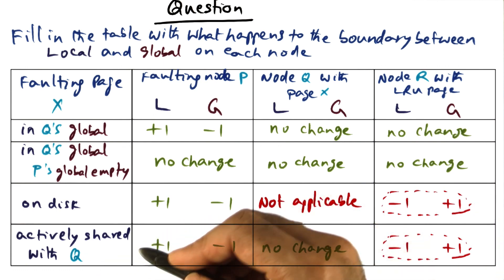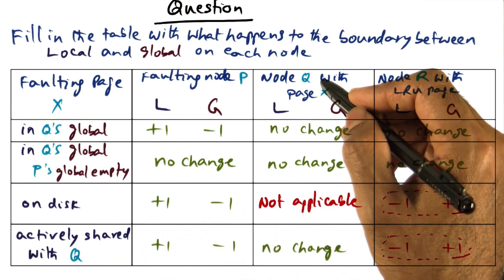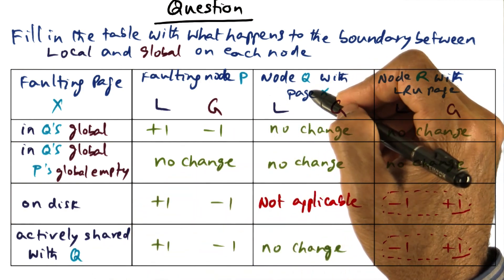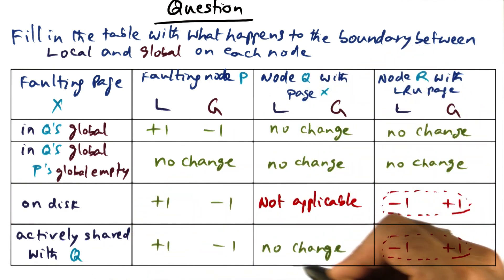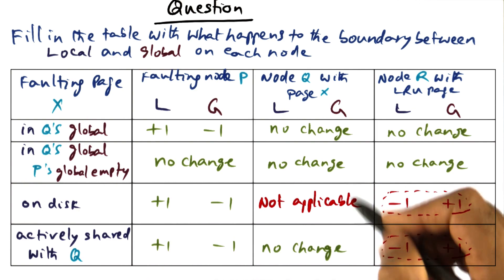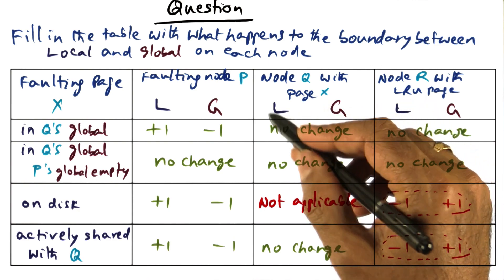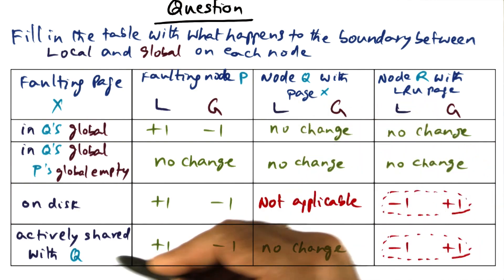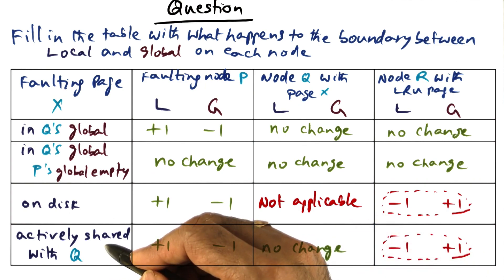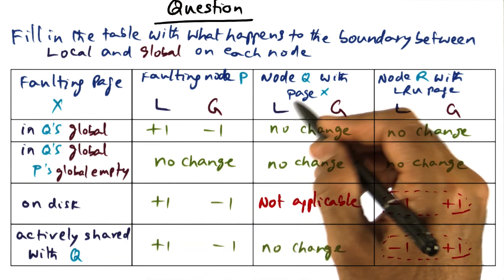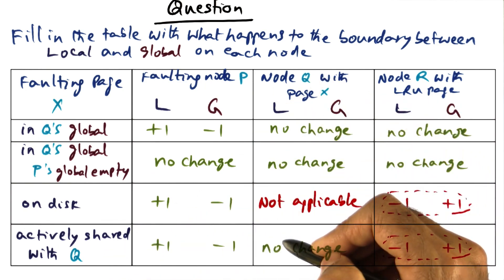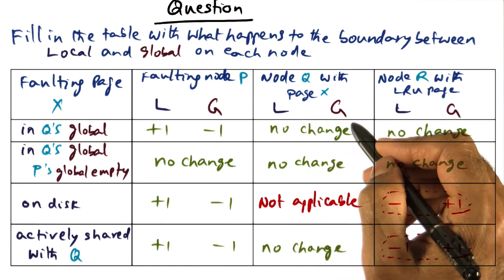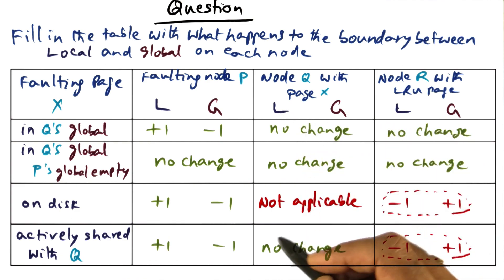And in the last case, when it is actively shared, even though we find the missing page in node Q, there's no change in the balance of L and G because it is coming from the active part of L because it is shared. It indicates if it is shared, it has to be from the L part of Q. Since it is actively shared, there's no change in the split between L and G.